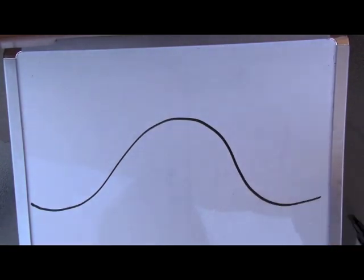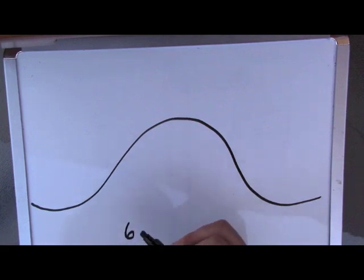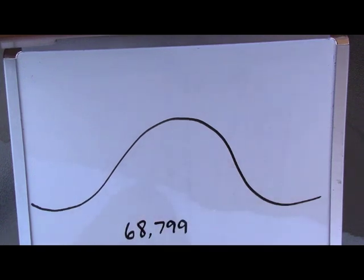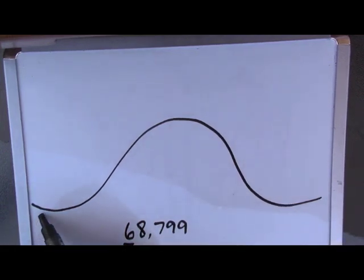This works really well with really big numbers as well, so let's try rounding sixty-eight thousand, seven hundred ninety-nine. We're going to round this to the nearest ten thousands place. So you'll just do the same thing. You're going to write your six, the number you underlined, and then count how many digits come after: one, two, three, four.